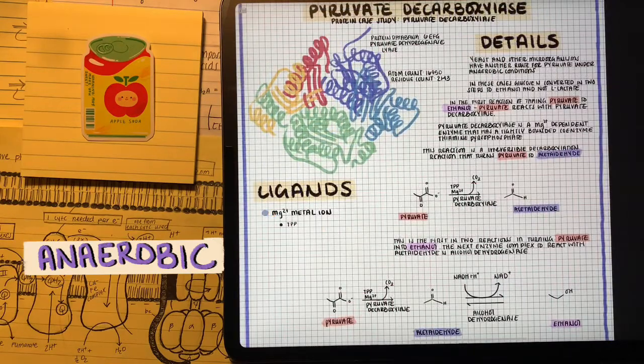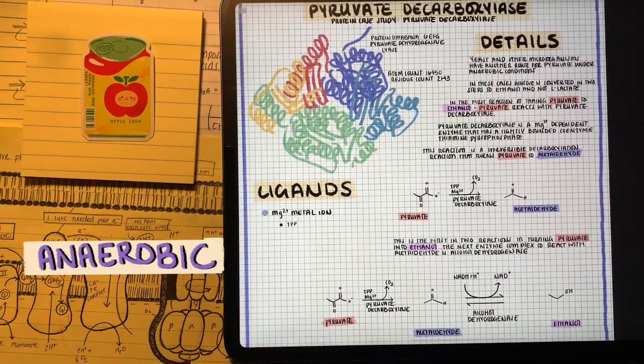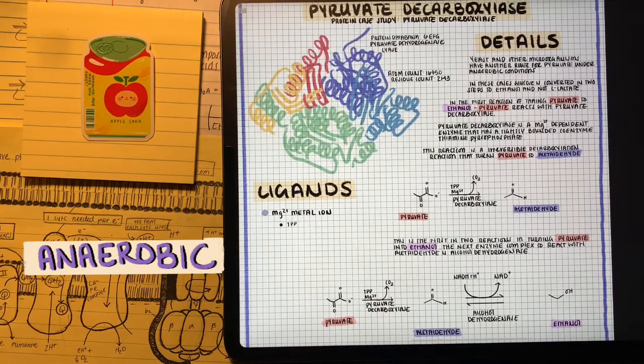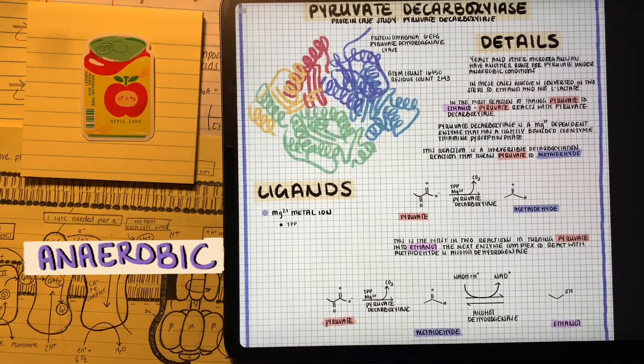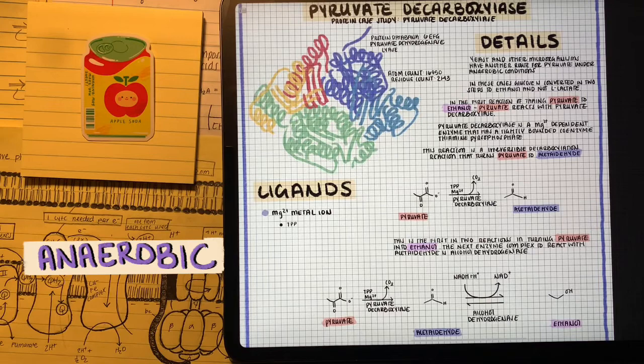For the second pathway, this is what we see in yeast and other microorganisms. It has the same goal, but a little different, and the product is different as well. But it helps regenerate NAD+ to feed into glycolysis.